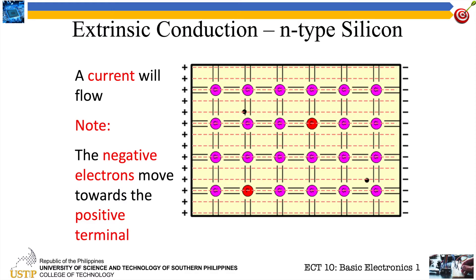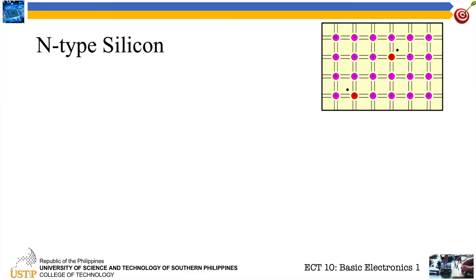Then you have a flow of current. This type of conduction is what we call extrinsic conduction, or n-type silicon. Why n-type? Because phosphorus has five free electrons and silicon has four, so we have one free valence electron available for conduction. That electron makes it n-type since it is an electron. When you have a free electron, you get n-type silicon.